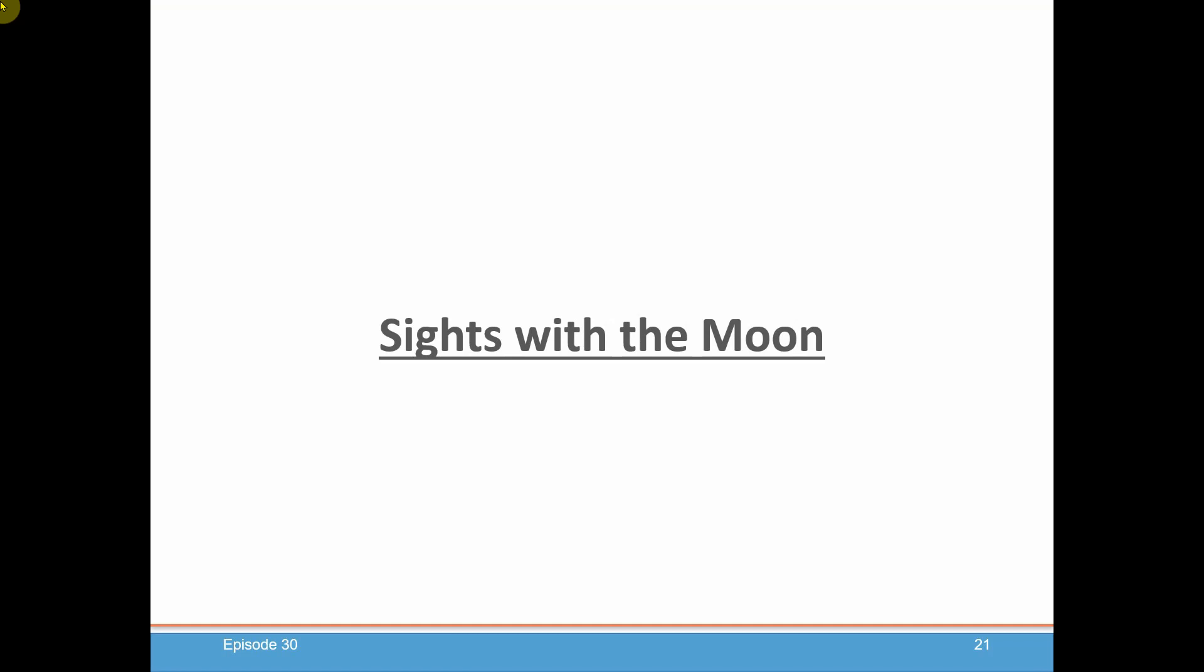Welcome back to another episode of Dominique Pernet's course on celestial navigation. My name is John Pinto. I'm a mathematician, amateur astronomer, and I'll be presenting Dominique's course to you. Today's episode is we're going to talk about how do you take a sight with the moon. We've already done the sun, we've done the planets, and now we're going to move on to the moon.